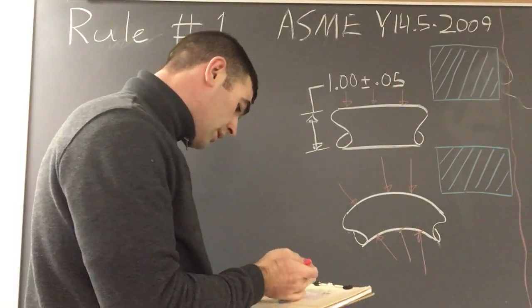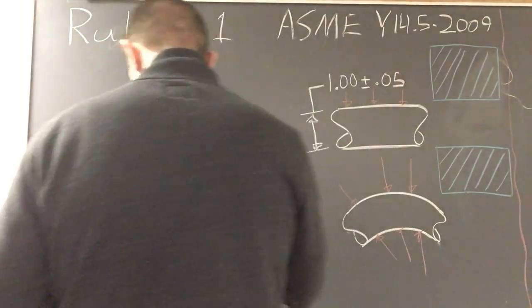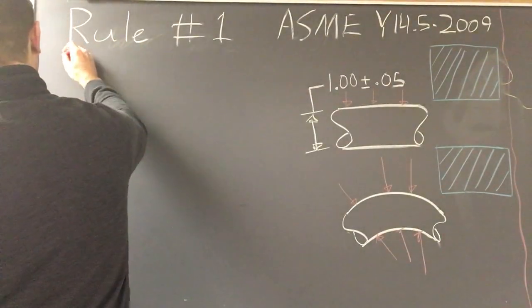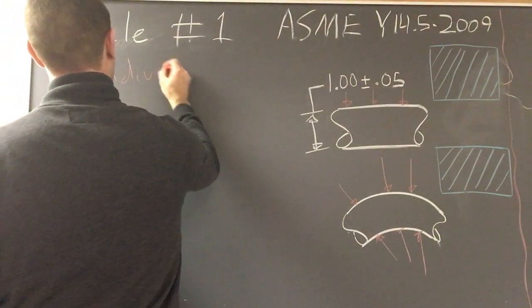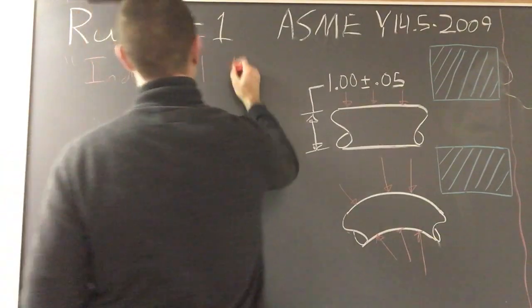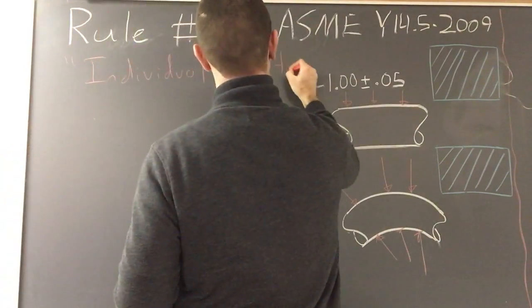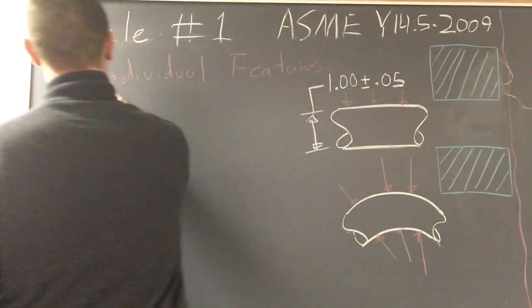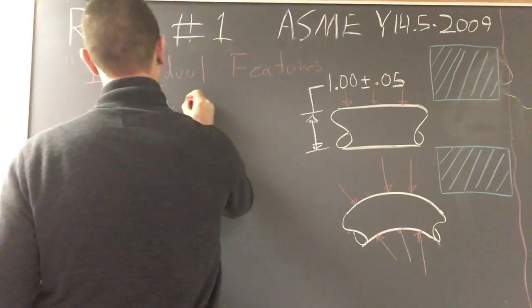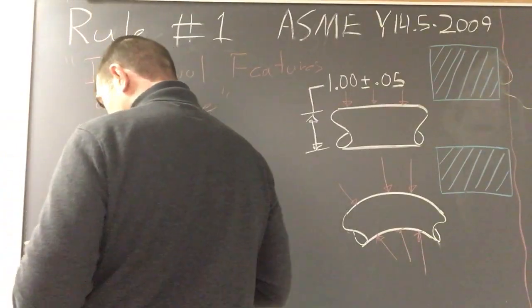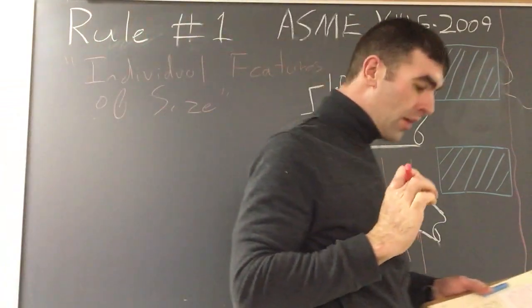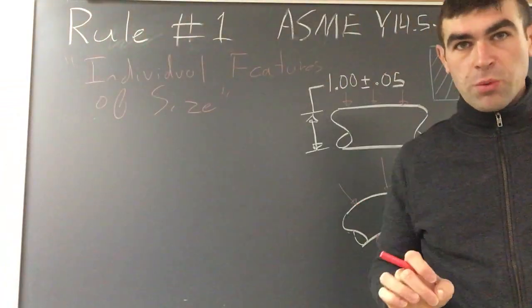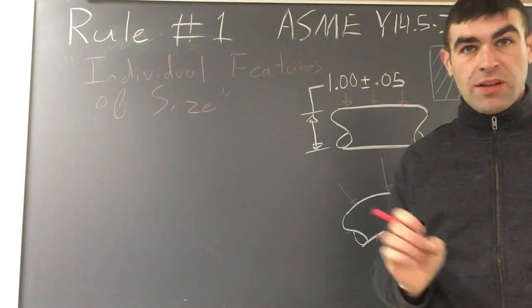Rule number one, also known as individual features of size, states that any dimensioned feature of size must have perfect form when at MMC.